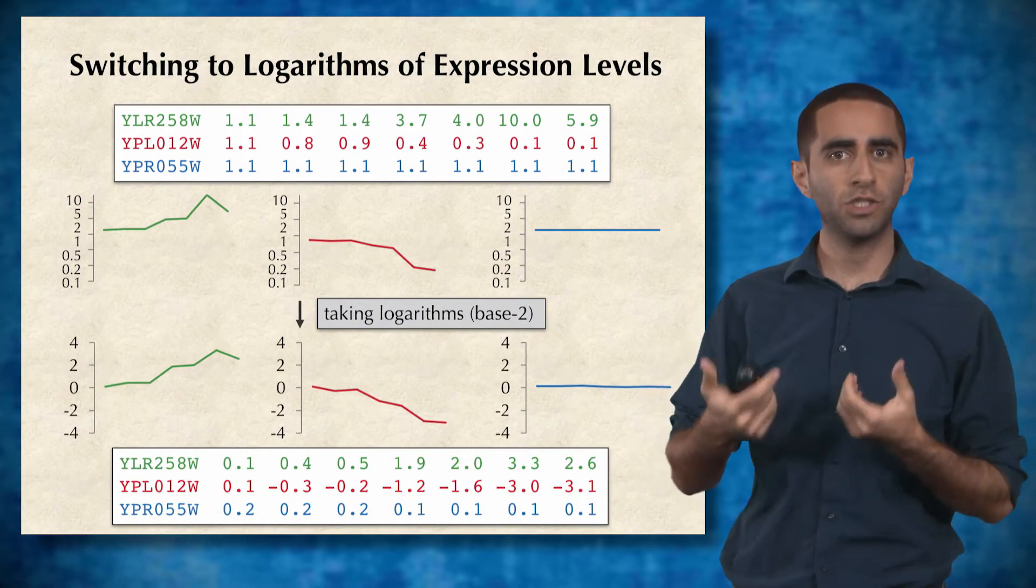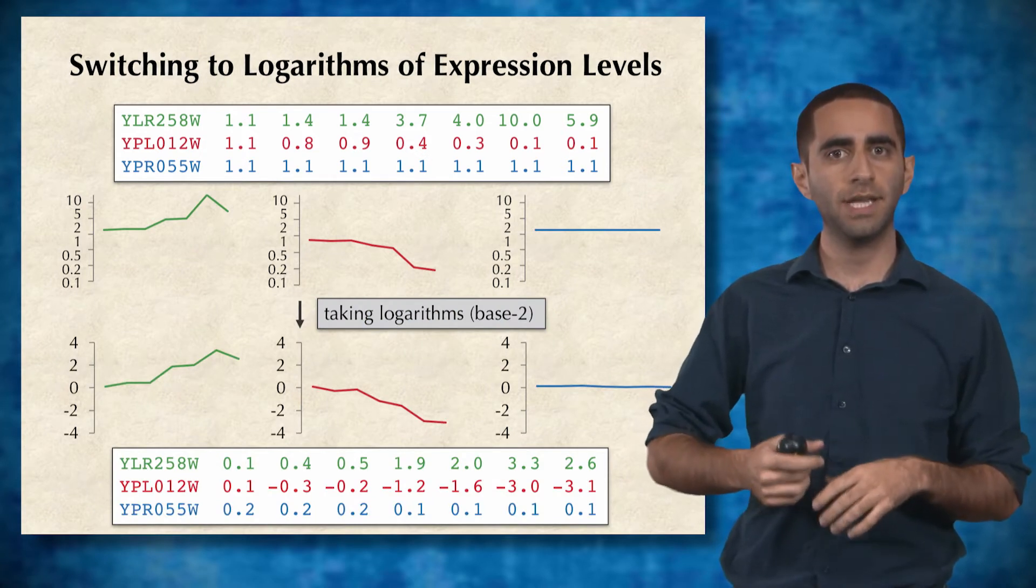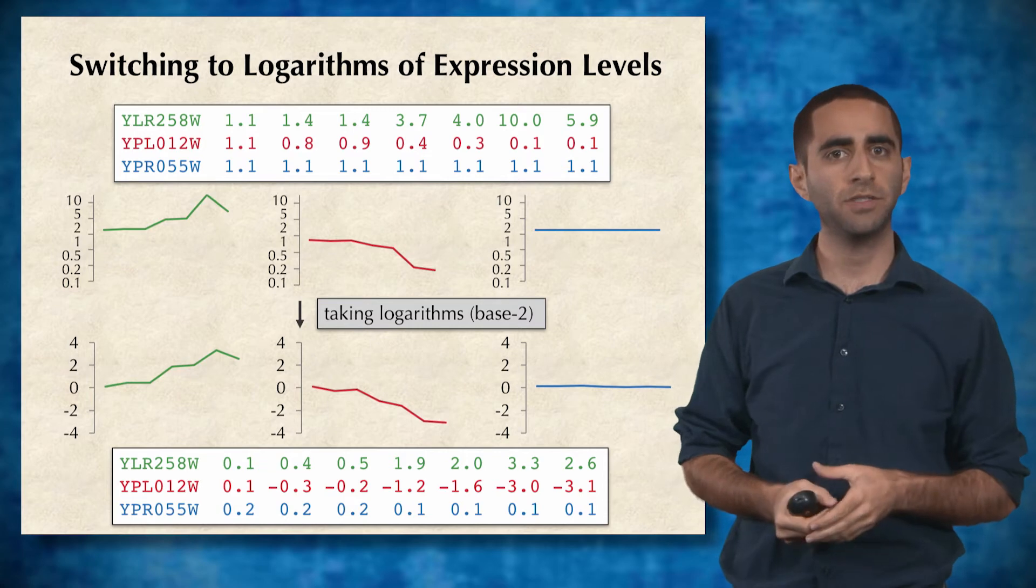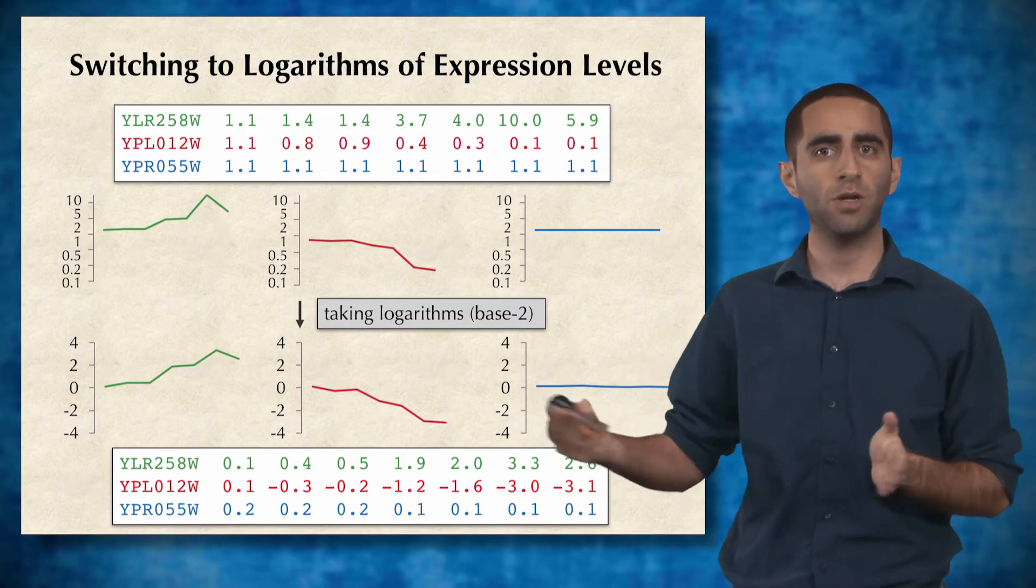Instead of taking raw gene expression values, we typically take the log base 2 of those expression values, just to give it more of a spread over the number spectrum.